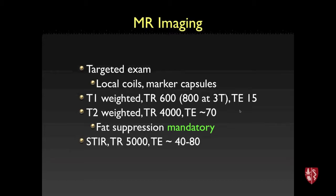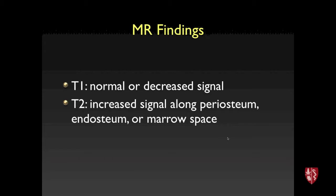For MRI, a targeted exam is performed focused on the area of interest — for example, the upper, mid, or lower tibia based on symptoms, using marker capsules. The basic protocol includes T1-weighted scans and T2-weighted fat-suppressed scans. Fat suppression is mandatory because edema cannot be seen well without suppressing the fat. T2 with fat suppression or STIR imaging is used frequently to detect bone marrow or periosteal edema.